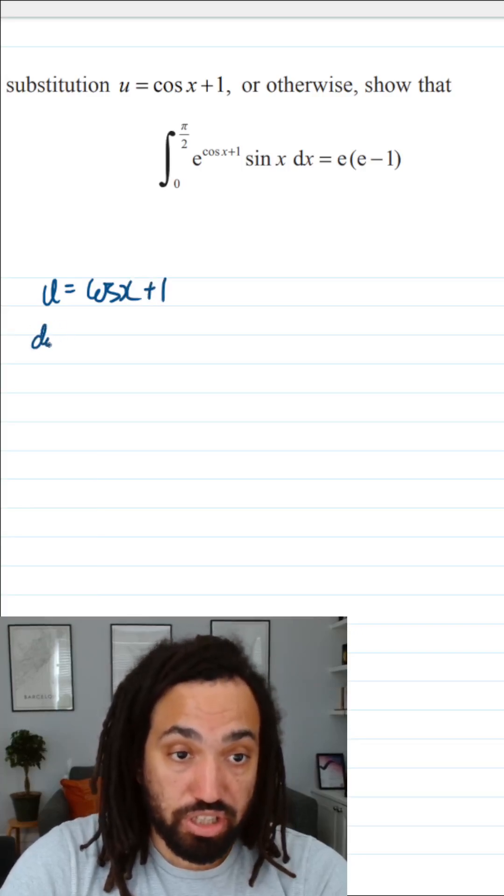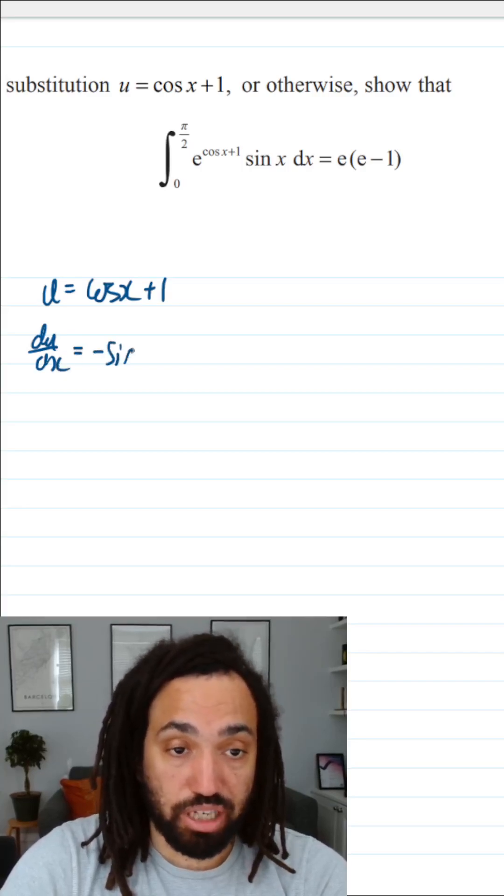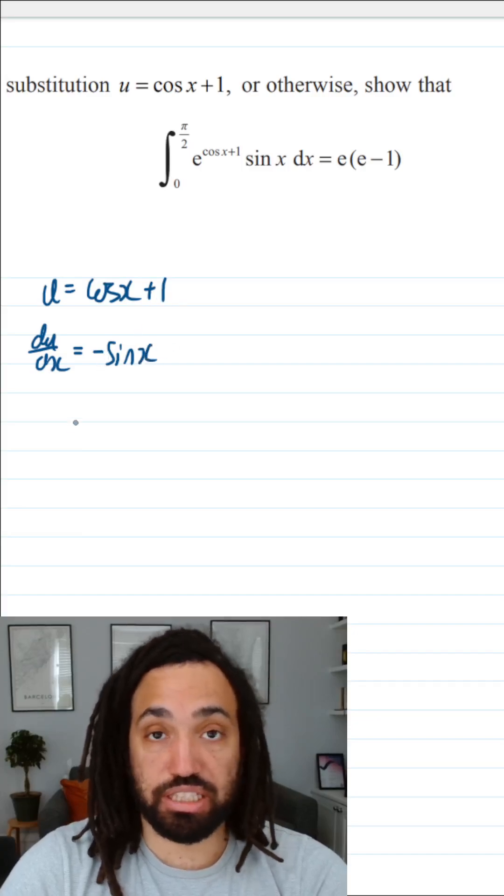The first thing we're going to do is differentiate the substitution. Cos x differentiates to minus sin x, and 1 is a constant so that differentiates to 0.